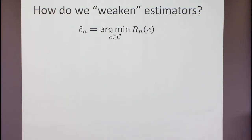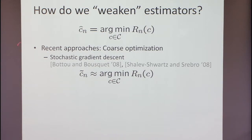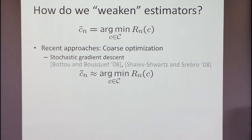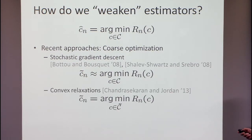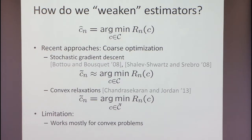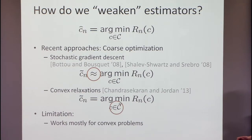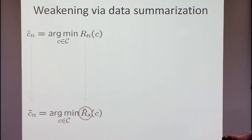Traditionally, when the problem is convex — for example for support vector machines — people tried to approximately solve this using stochastic gradient descent, which is what Sham has refined. Another approach, more recently by Shalev-Shwartz and others, created a hierarchy of convex relaxations. But the caveat in all these approaches is that they really need a convex problem. What they are doing is approximately solving by changing the constraint set. Another thing we can think about is changing the objective function — approximating the objective function using data summarization.